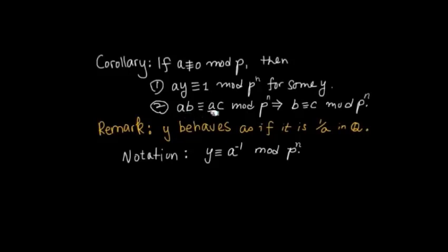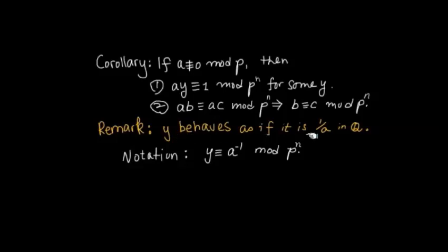So if a and b share a common factor in a congruence relation, you can cancel those a's as if it were an equality — just as you can cancel nonzero factors in an equation to get b equal to c. The same thing can happen in a congruence relation: if a is not congruent to zero, we can multiply both sides by the multiplicative inverse y, and this y really does behave like the reciprocal found in rational numbers. We use the inverse notation for it in modular congruence.